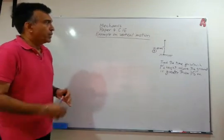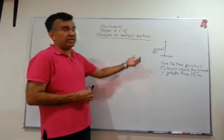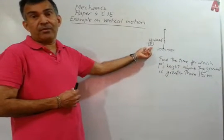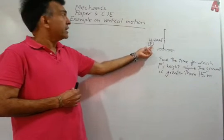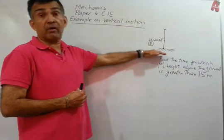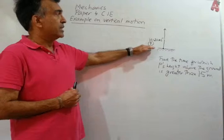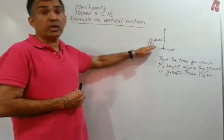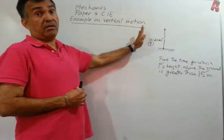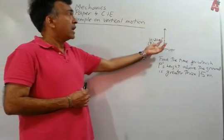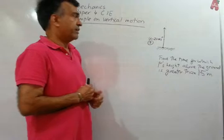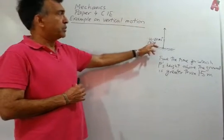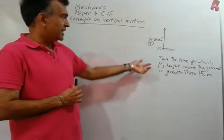First, the ideas in the question, then we'll talk about how to approach this. We have a particle P which is projected vertically upwards from ground level. The speed of projection is 20 meters per second, or the initial velocity is 20 meters per second upwards.